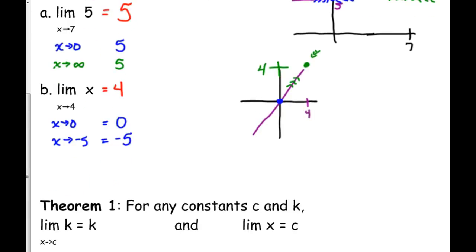As x approaches negative 5, then it's going to be negative 5. So this is defined as a theorem. For any constants c and k, the limit of k, a constant as x approaches c or any constant, that limit is always k. And if you've got the limit of x as x approaches c, that answer is always going to be c.